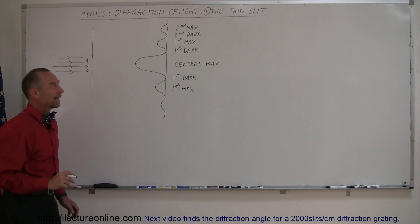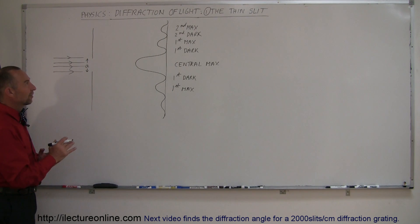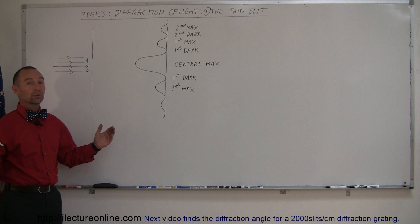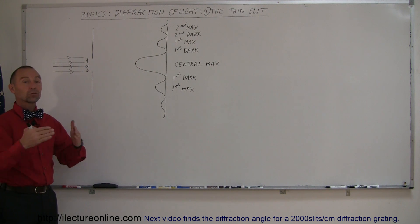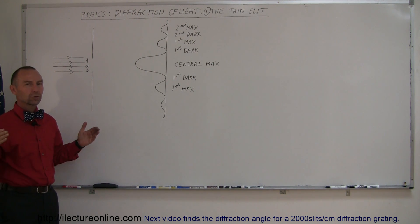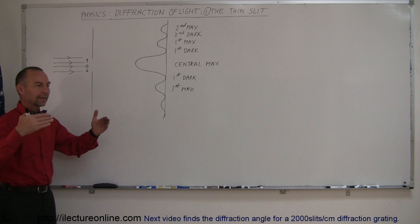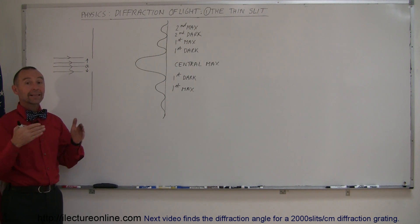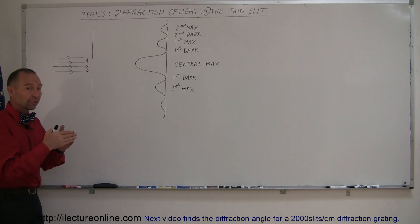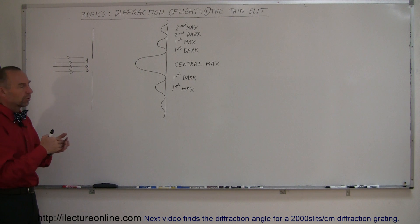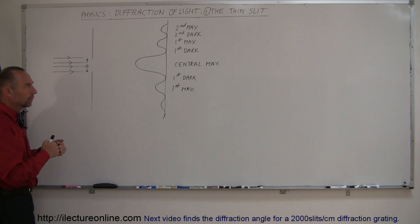Welcome to iLecture Online. In the previous set of examples, we talked about light interference. We have multiple sources — we've talked a lot about a double source system. We have two sources of light; they come together and the path length difference is different. And so when they come together, there's either constructive or destructive interference.